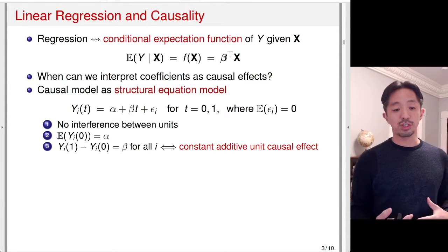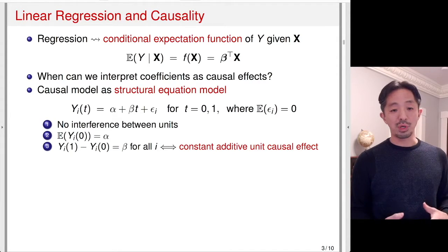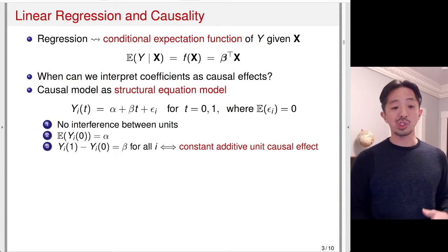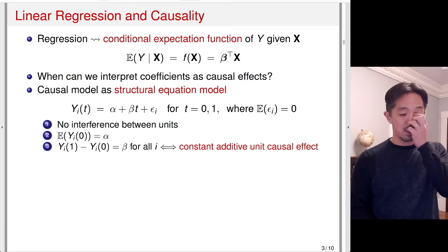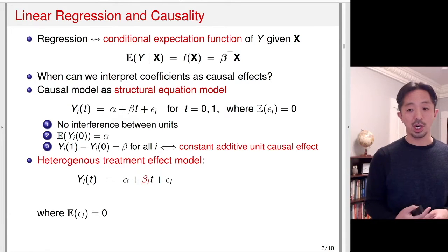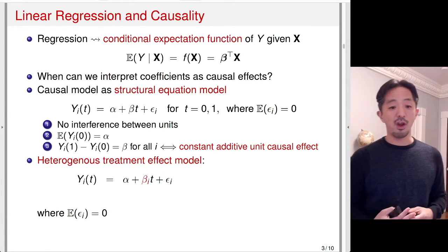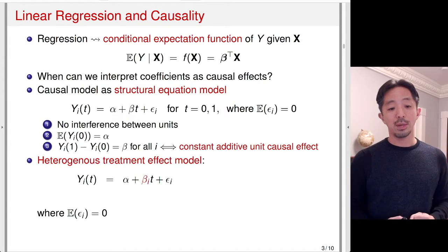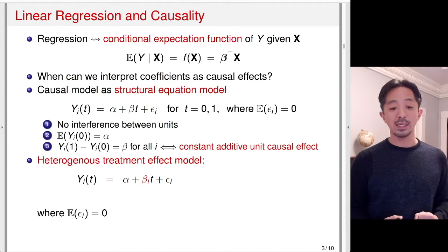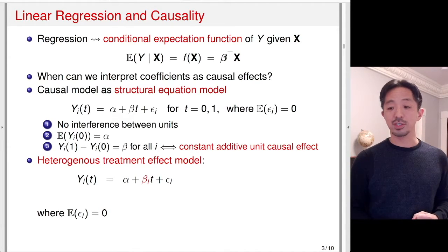That's a very restrictive model, so we wish to relax this assumption by considering a heterogeneous treatment effect model. I'll write that model here. It's very similar to the model above, except that now the beta coefficient has a subscript i, which implies that the treatment effect can vary across units.